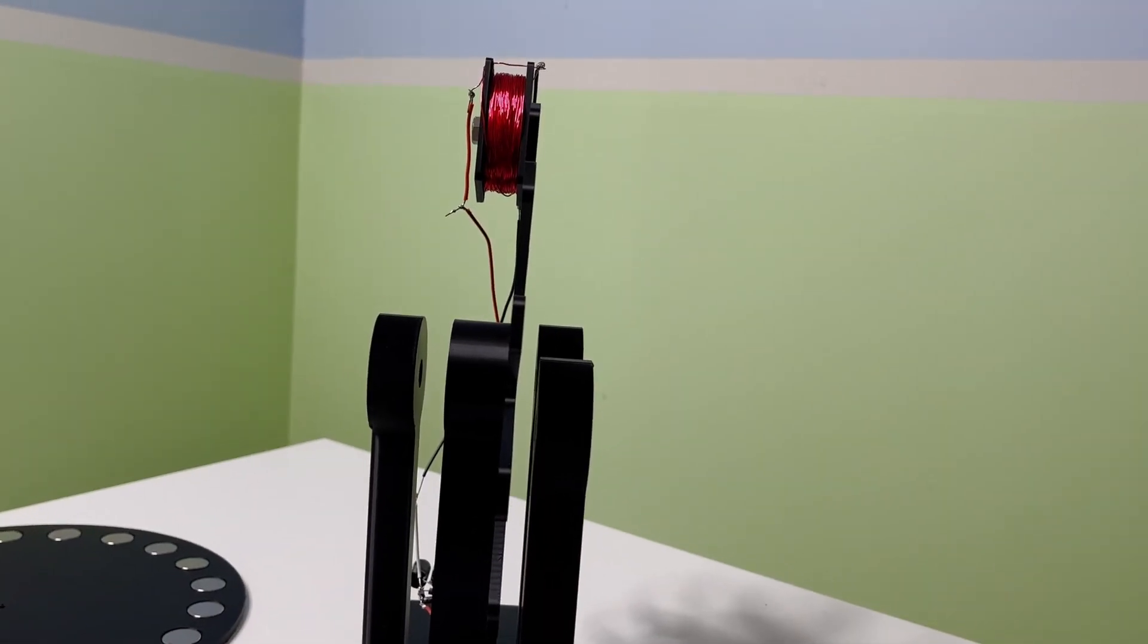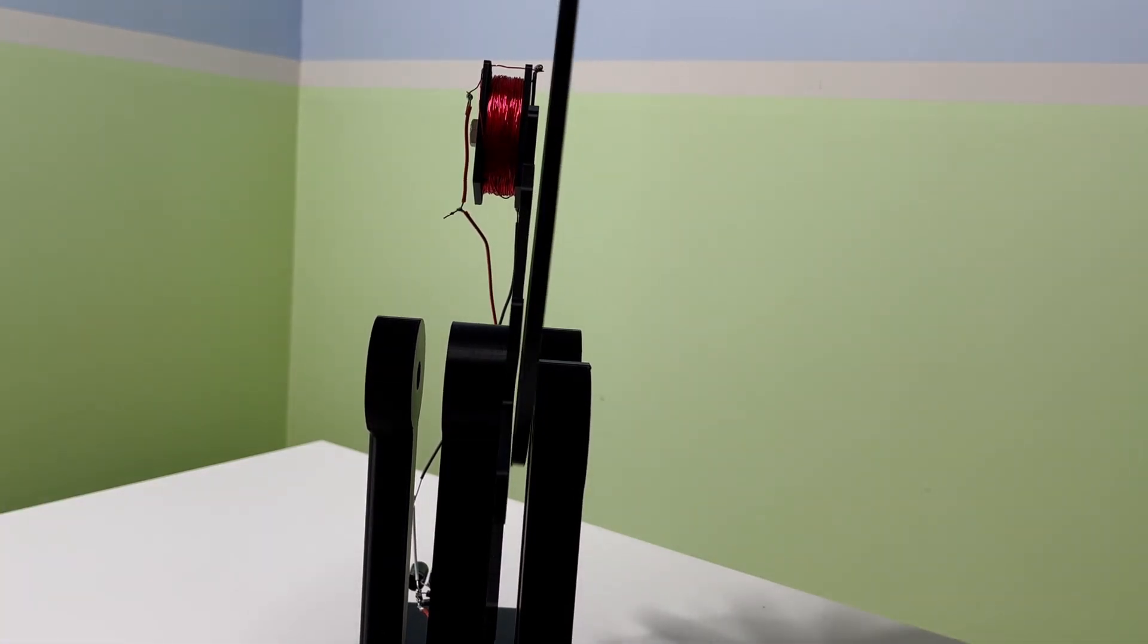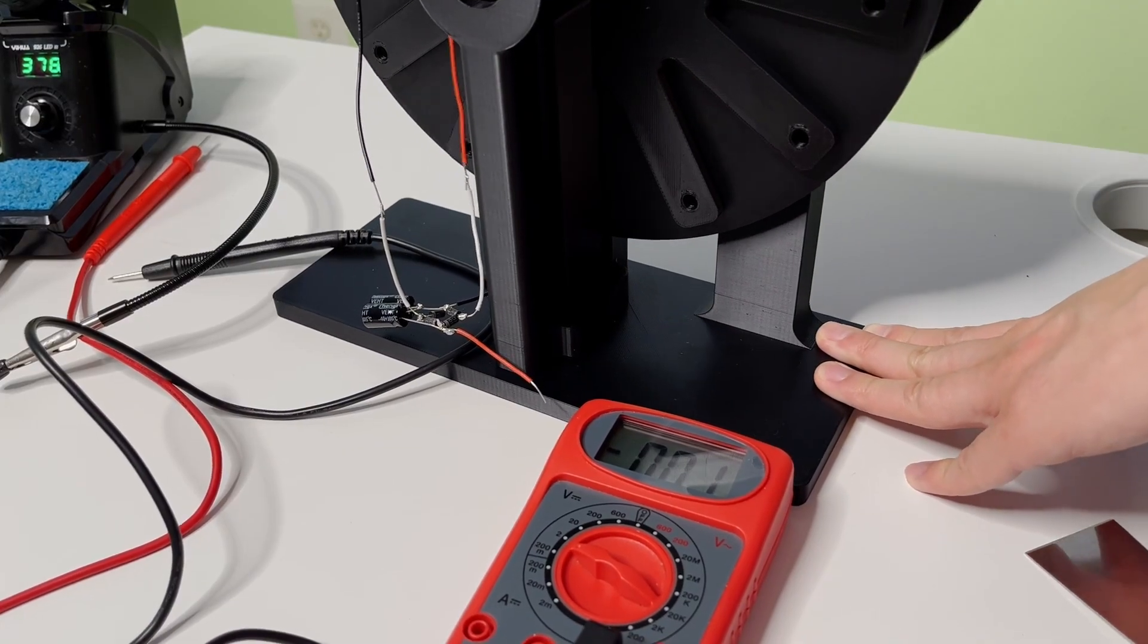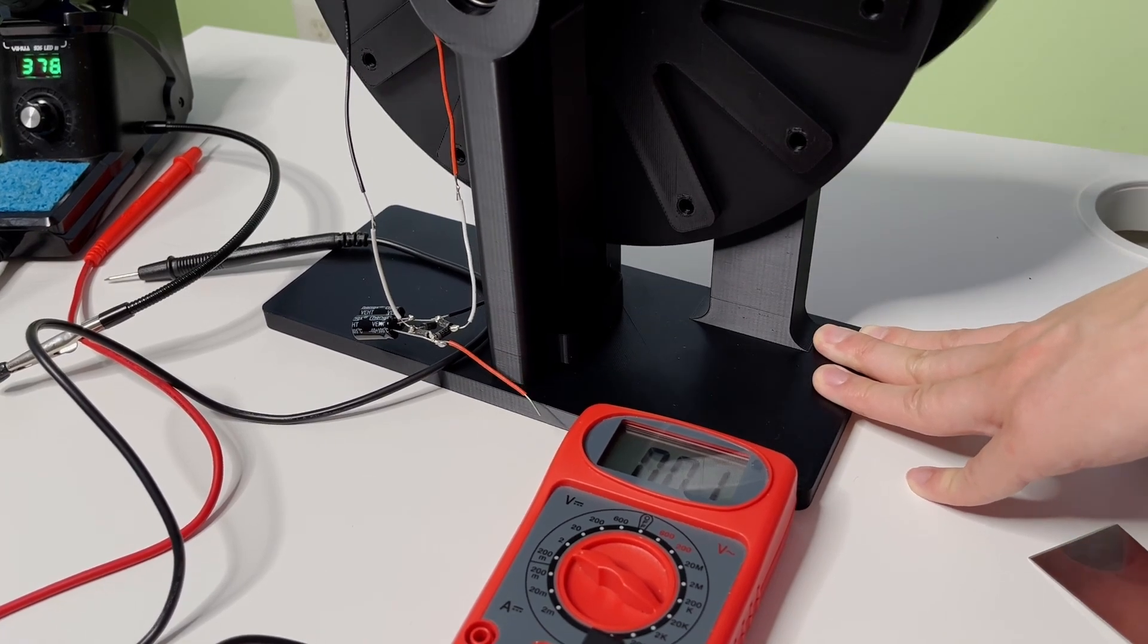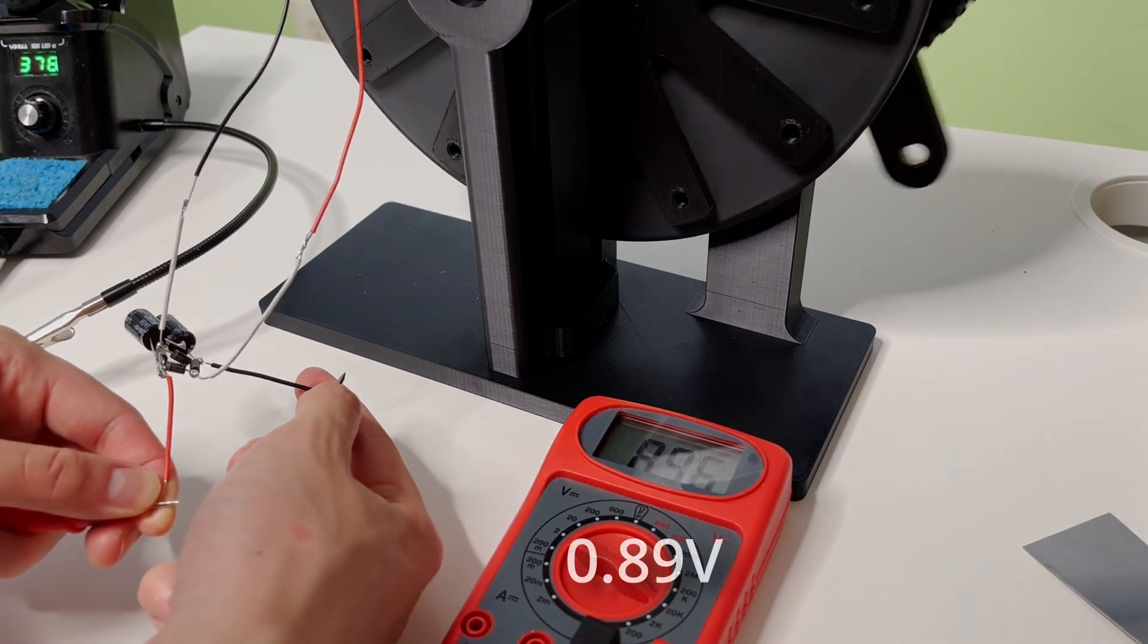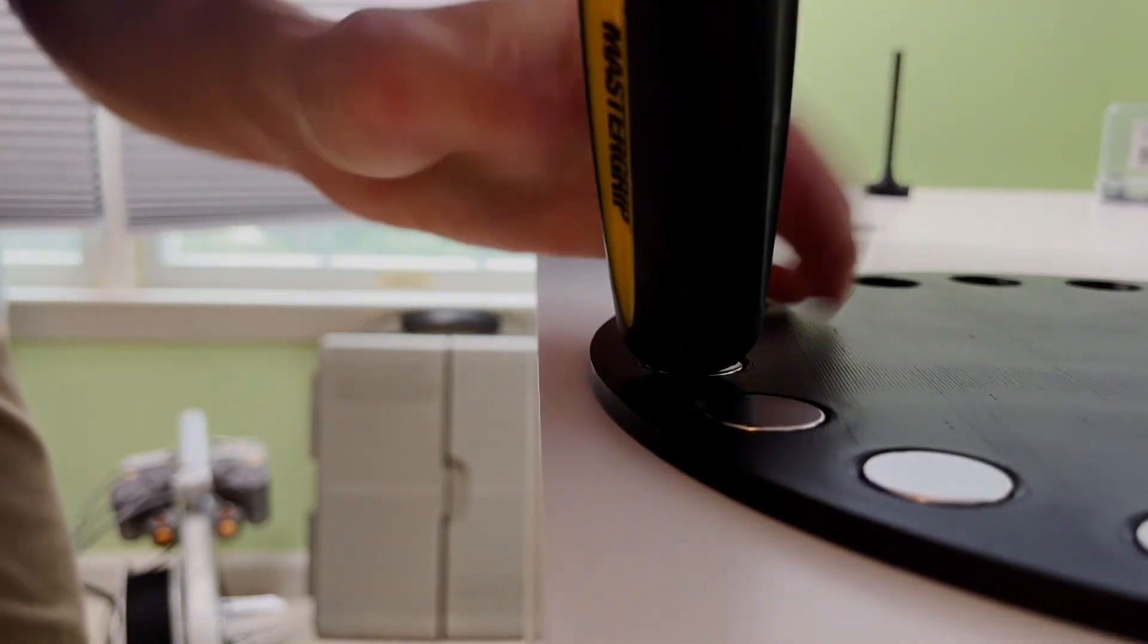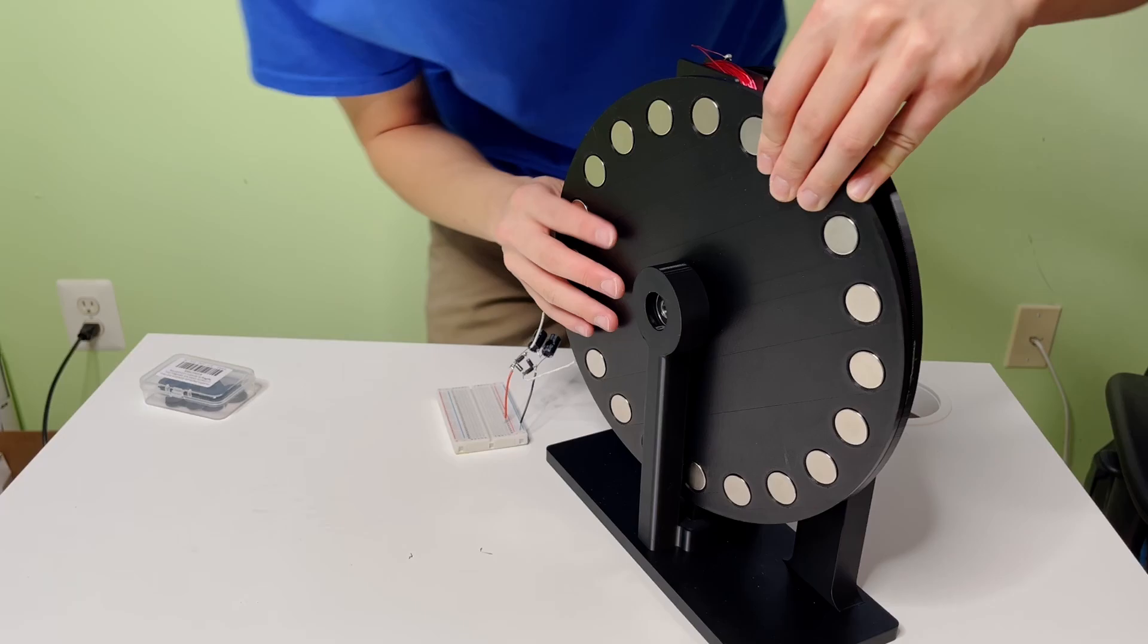This test will let us know how much voltage we get from one coil and one rotor. And slide this right in there. There we go. Oh, that's 0.8. Now, I wanted to see what happens if we get two rotors in here and see if it further increases the magnetic strength through the coil, increasing voltage. I don't know. Oh, jeez.